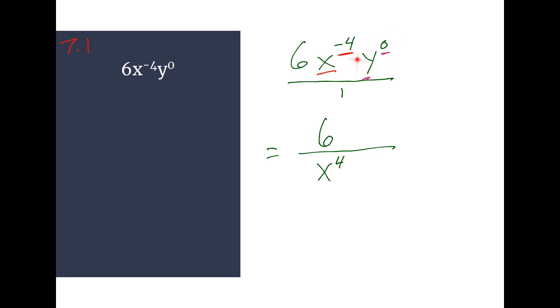And then we have y to the 0. And if we remember, anything to the 0 power is just 1. So that's just going to turn into a 1. 6 times 1. We can do that math. That's just 6. And then my bottom is just going to stay x to the 4th.